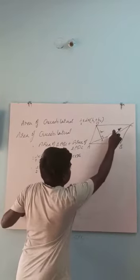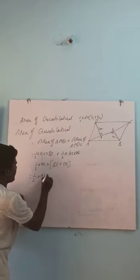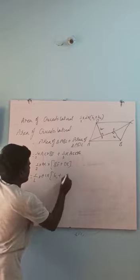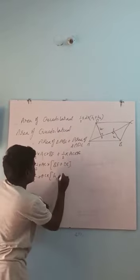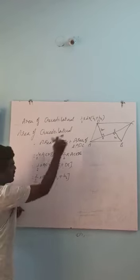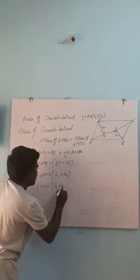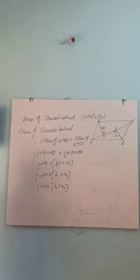Here, BF is the height of the triangle, so let us take BF as H1. Next, DE is H2. AC is the diagonal of the quadrilateral. The area is half into D into H1 plus H2. This is the proof of area of the quadrilateral.